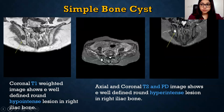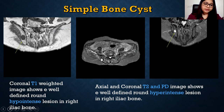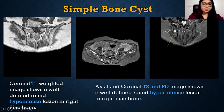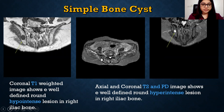Simple bone cyst: coronal T1-weighted image showed a well-defined hypointense lesion in the right iliac bone. It was hypointense on T1 and hyperintense on T2. It was an incidental finding of a simple bone cyst, and the patient had no complaints.